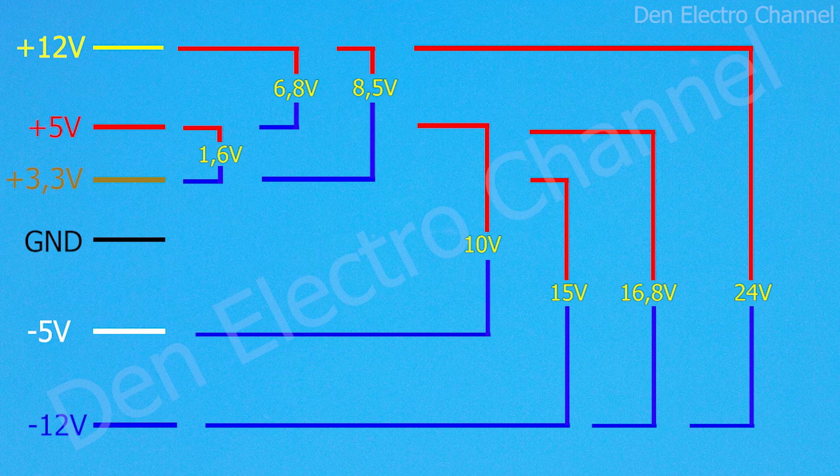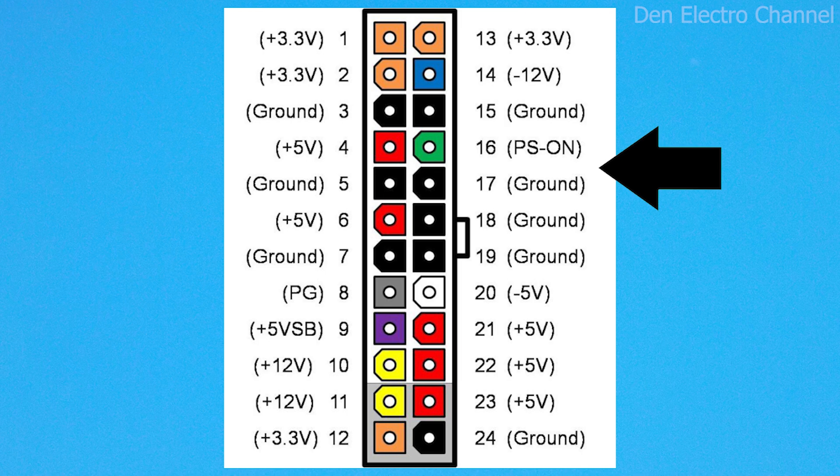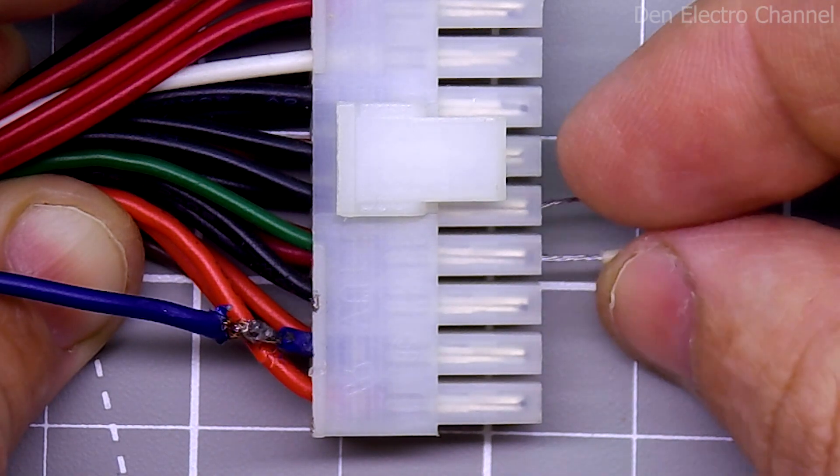Now I will test some of these lines and show what load can be removed from them. All these voltages can be taken from the ATX connector. I will connect to it. In order to turn on the power supply, you need to short circuit the PS_ON contact and ground. For this, you can make a jumper from the wire.